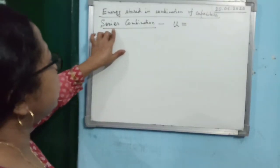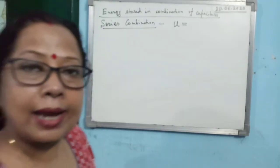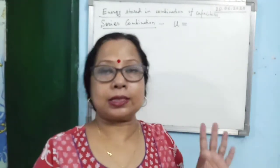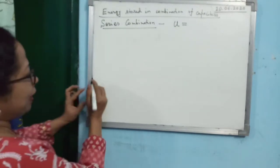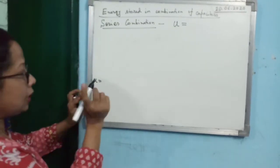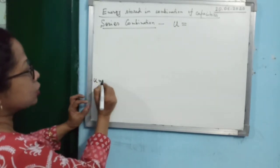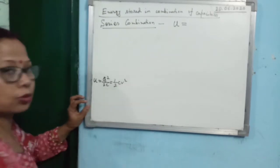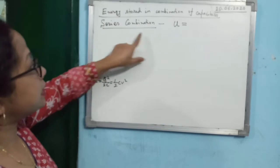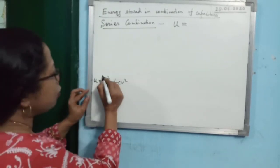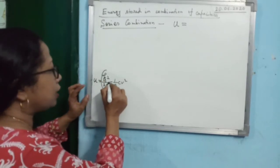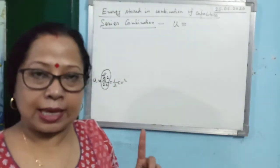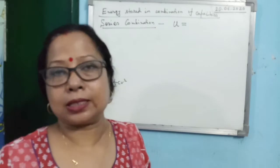First, let us find the energy stored for series combination. For series combination, we know that the charge is the same for all capacitors. Now, what is the expression for energy? The energy stored in a capacitor can be written as q²/2C, or you can write it as ½CV². For series combination, since q is the same for all, we will use the expression q²/2C for the energy stored in each capacitor.